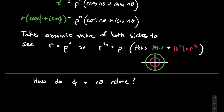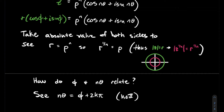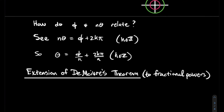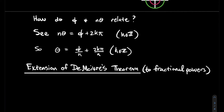How do phi and n theta relate? We just figured out how r and rho to the n relate — now I want to look at how the arguments of these two complex numbers relate. Since these are two expressions that yield the same complex number, these angles can only differ by a multiple of 2 pi. So n theta and phi can differ by some integer multiple of 2 pi. Solving this thing for theta: theta should be phi over n plus 2k pi divided by n. And here is the extension of De Moivre's theorem, where k is an integer.